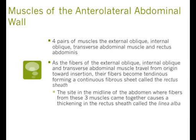There are four pairs of muscles of the anterior lateral abdominal wall: your external oblique, your internal oblique, transverse abdominal muscle, and the rectus abdominis. The fibers of the external oblique, internal oblique, and transverse abdominal muscle travel from their origins, sort of lateral on the thorax, toward the abdomen. Their fibers actually become tendinous — they transition from red muscle to a white fascial sheath. There's a very broad aponeurosis in the anterior part of your abdomen where all the muscles converge into this sheath together.